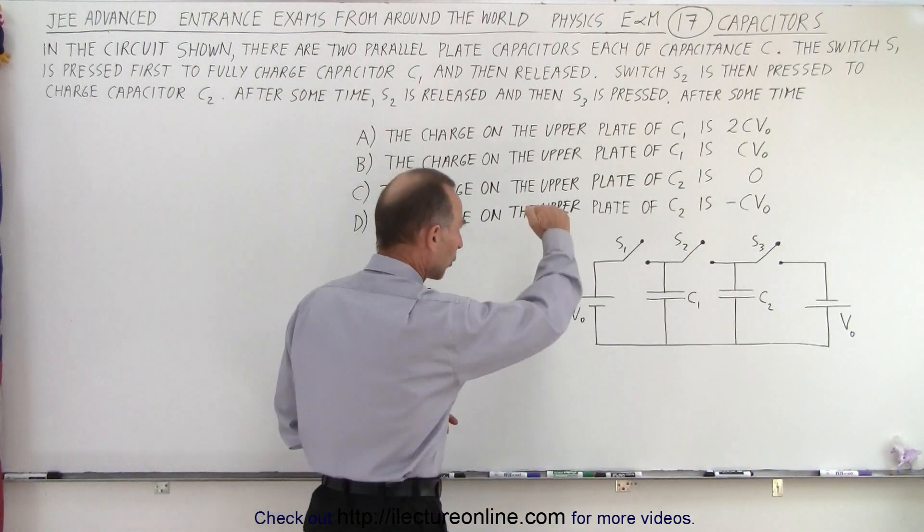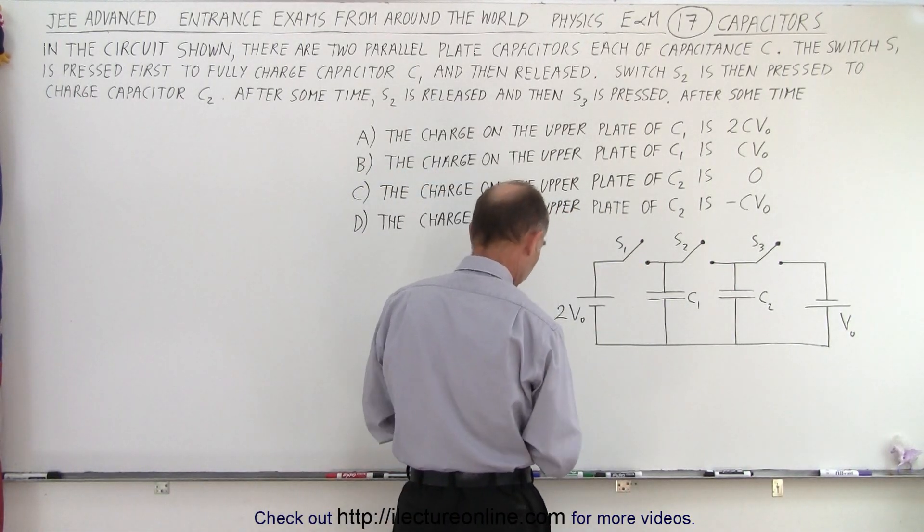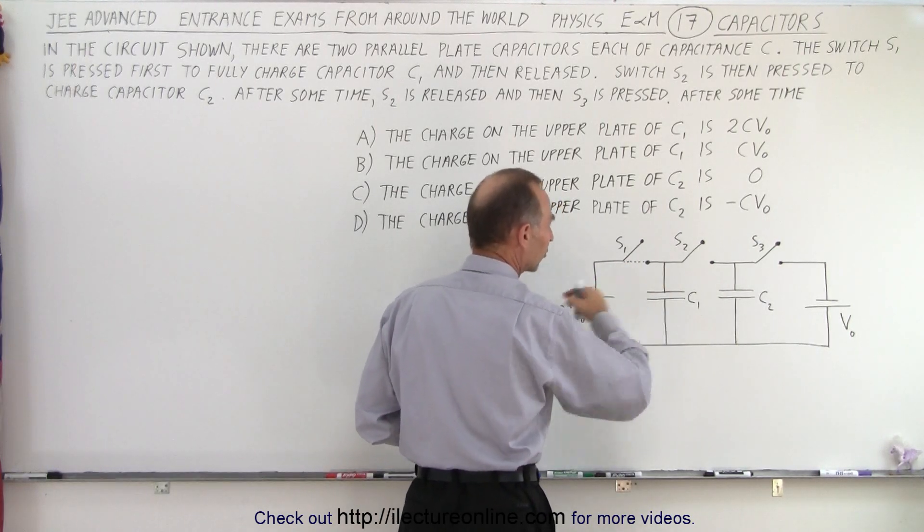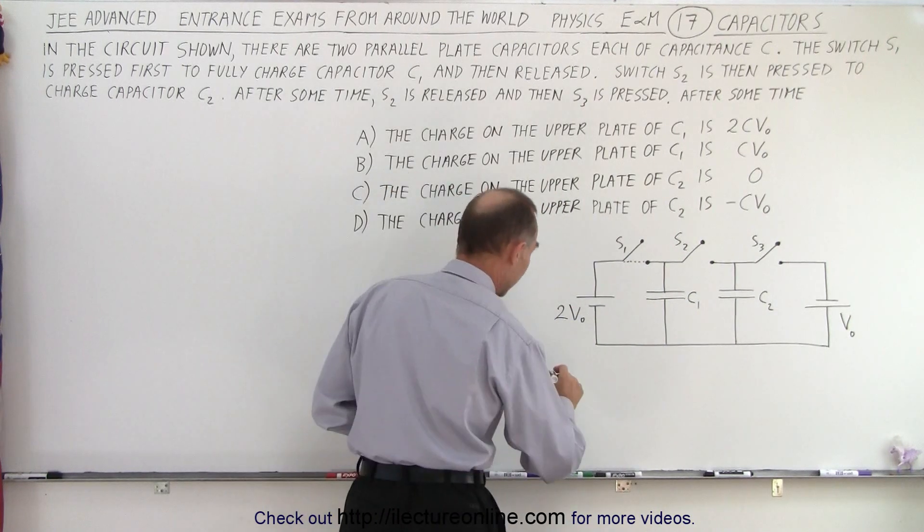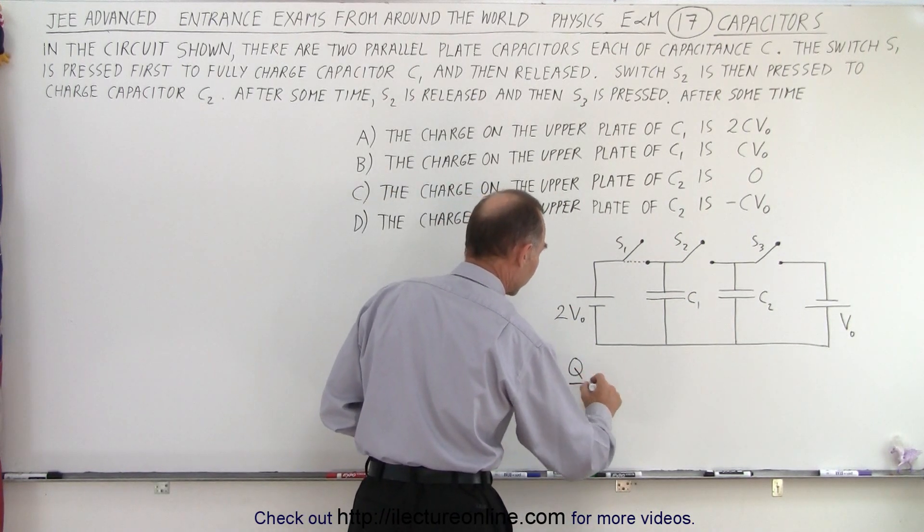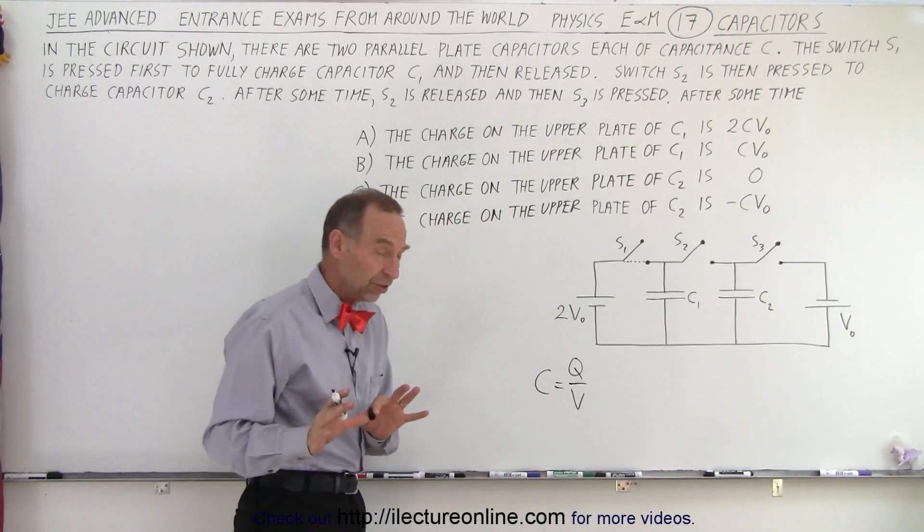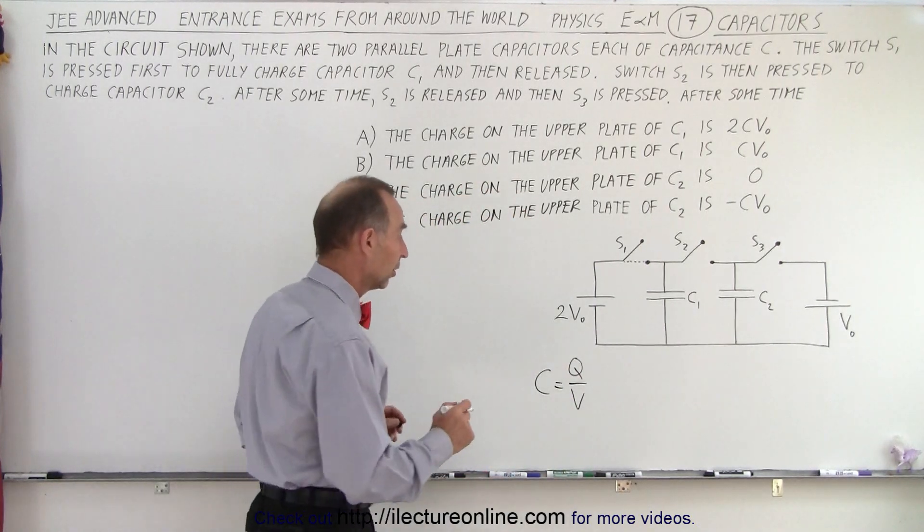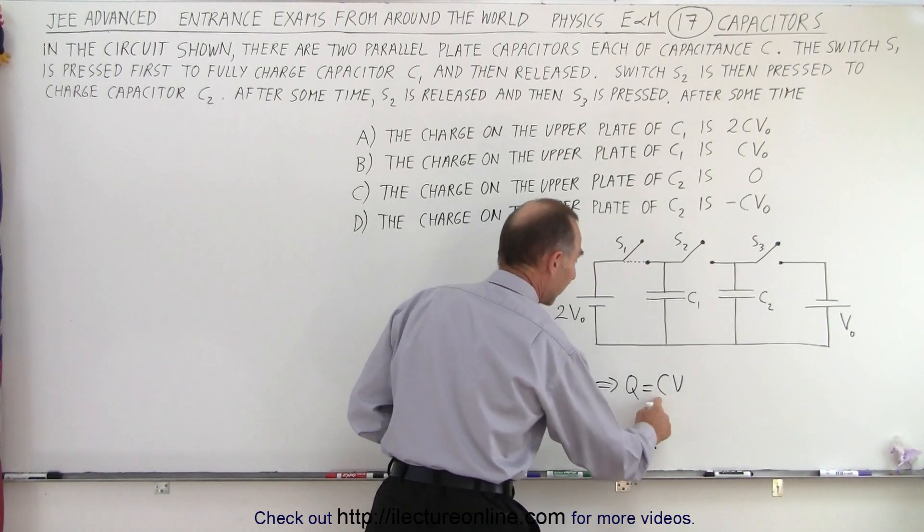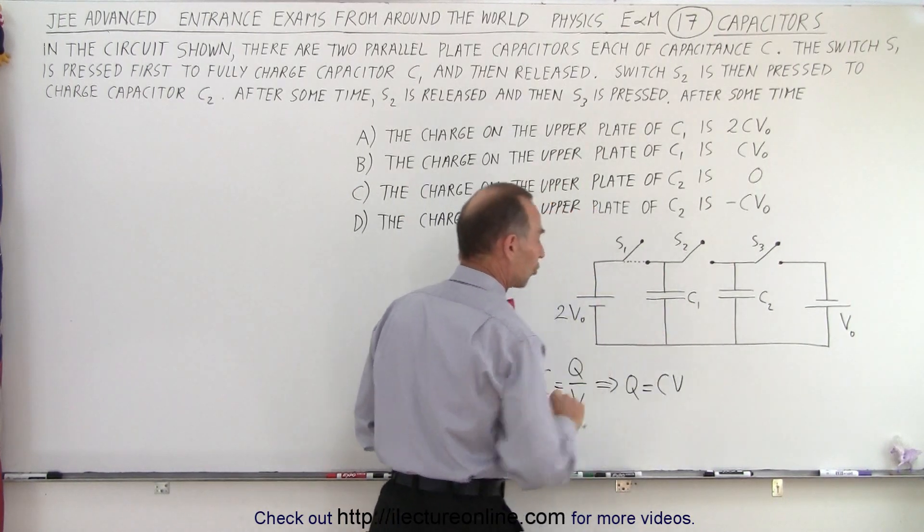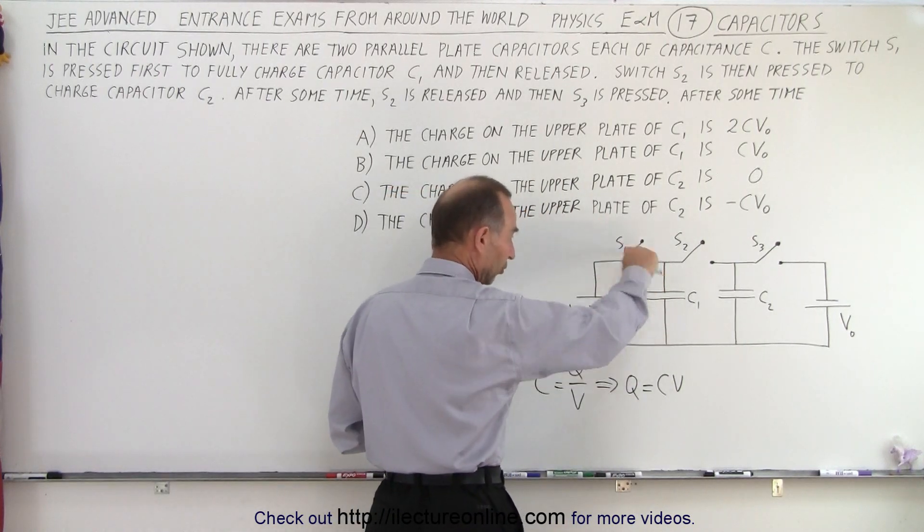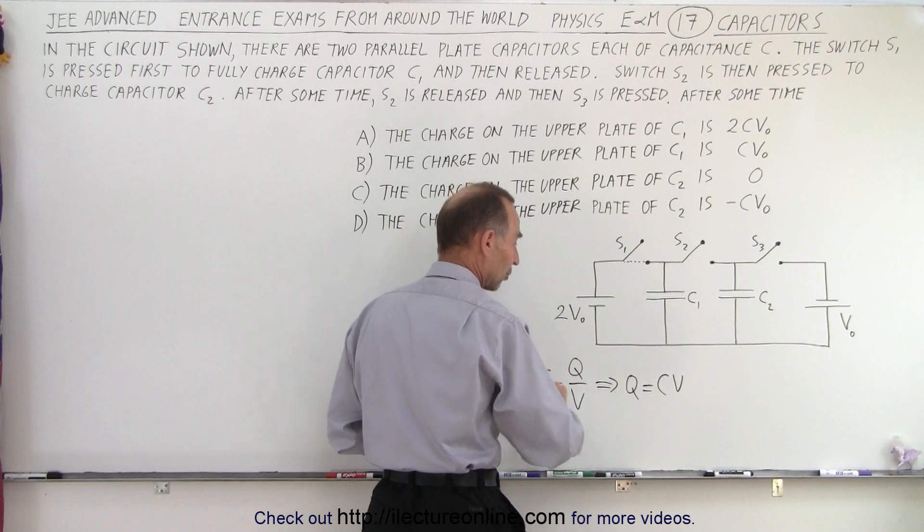All right, first of all we're going to close switch S1. So now switch S1 is in this position, so this battery will then charge this capacitor. Now keep in mind that by definition the capacitance is equal to the charge on the capacitor divided by the voltage that puts that charge onto the capacitor. So that means that Q, the charge, is equal to C times V. The capacitance times the voltage driving that charge. Now in this case the voltage driving this charge when this switch is closed is this voltage right here.